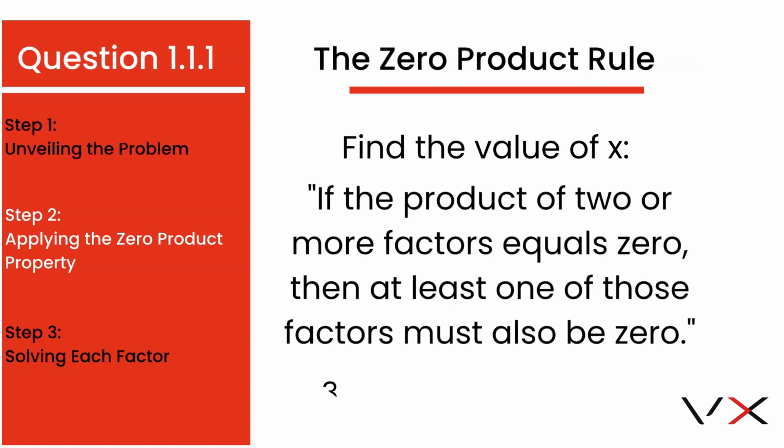Our task is simple yet profound. Find the value of x, and we have a secret weapon, the zero product rule. It tells us if two things multiplied equal 0, one or both must themselves be 0. Let's split them up and see what each tells us about x.